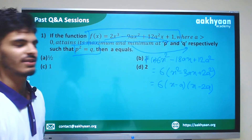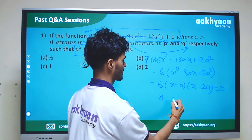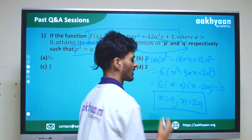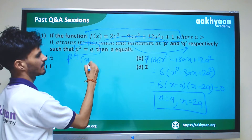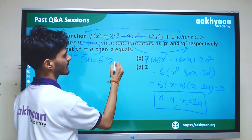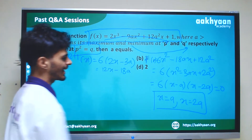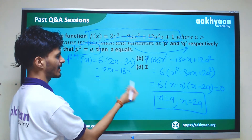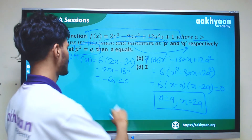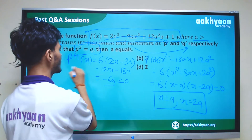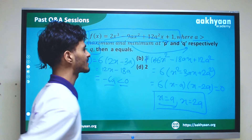Setting the first derivative to zero, we get x is equal to a and x is equal to 2a as the critical points.